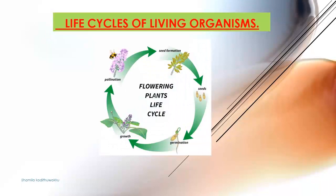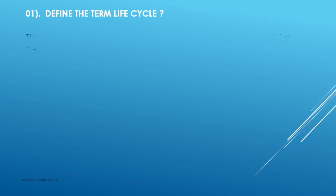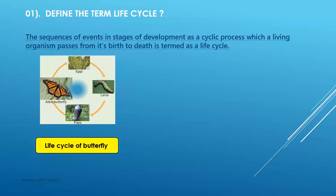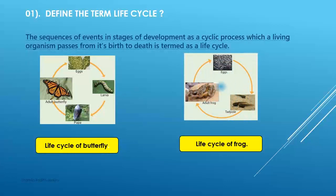Life Cycles of Living Organisms. In this lesson, we discuss life cycles of animals, then life cycles of plants, and after that the importance of learning life cycles. First of all, we discuss what is meant by a life cycle. The sequence of events and stages of development as a cyclic process which a living organism passes from its birth to death is termed as a life cycle.